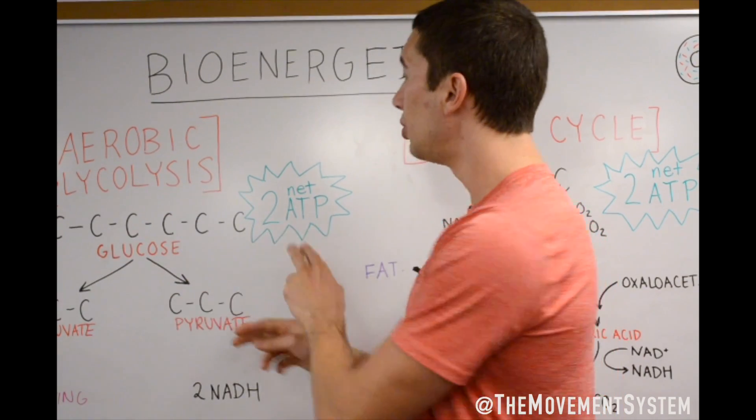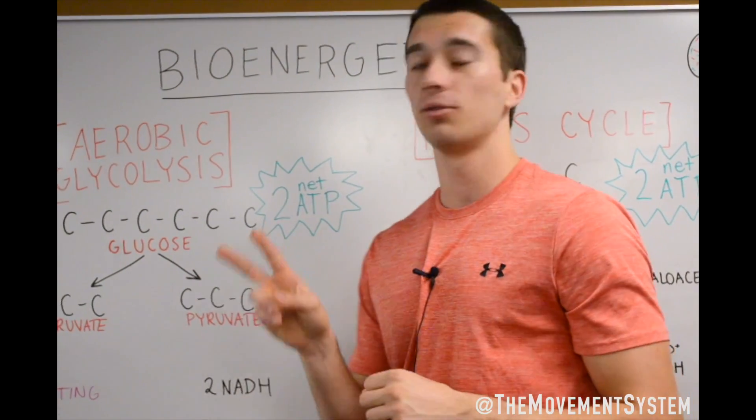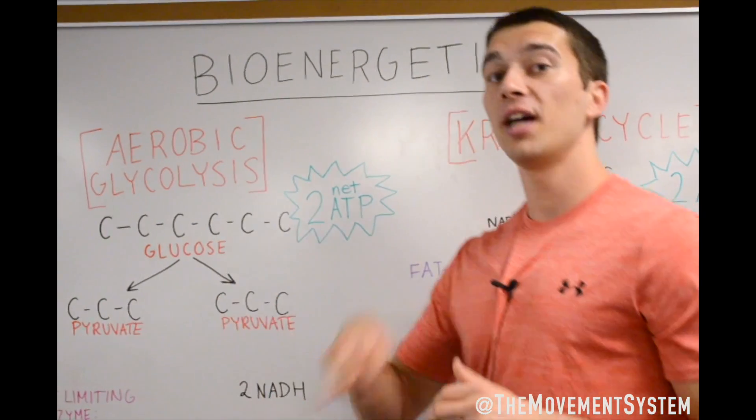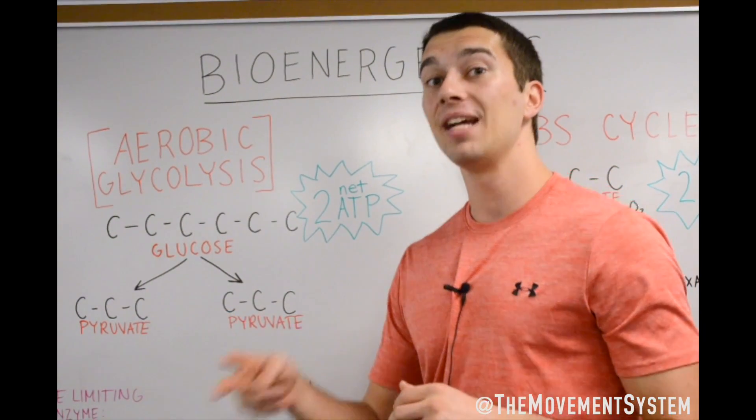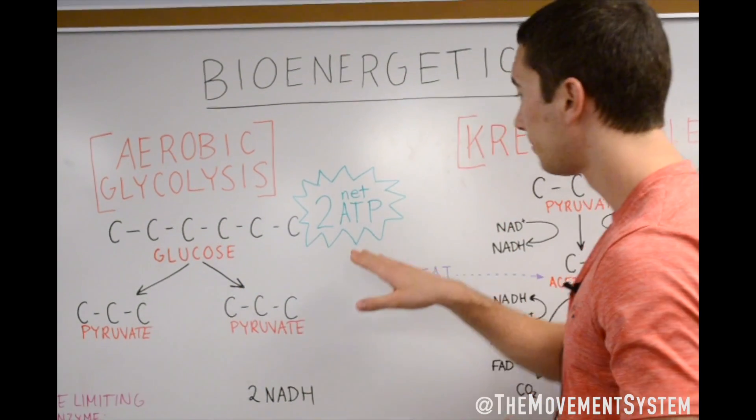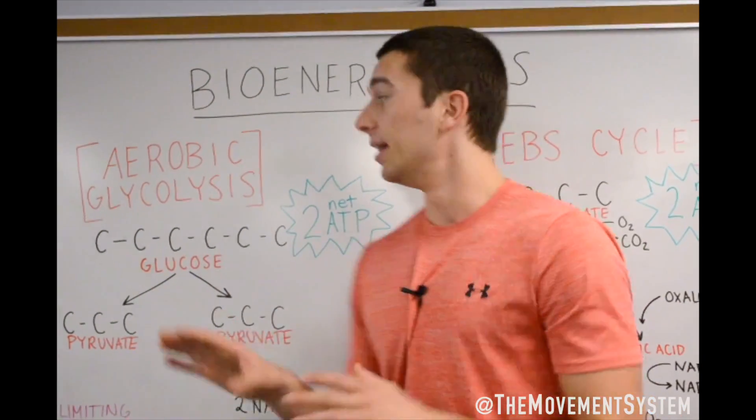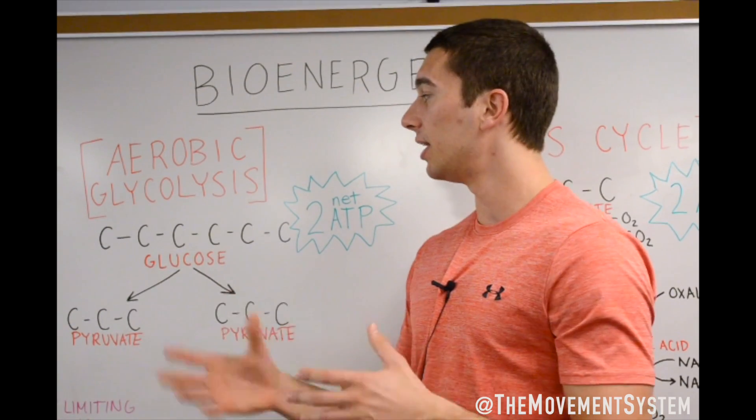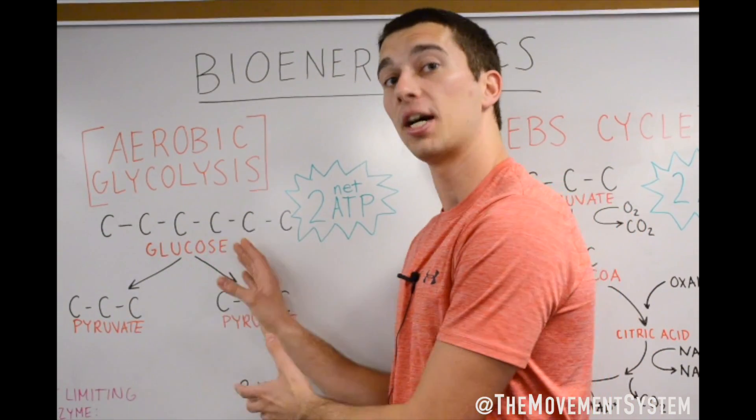So glycolysis gets you two net ATP. The reason we say net is because it actually costs two ATP to make four ATP, but you get two net ATP. Again, this is out in the cytoplasm of the cell. Basically, that just means it doesn't need oxygen.